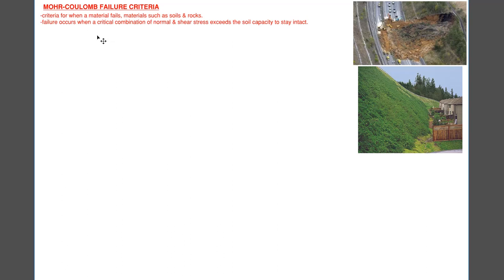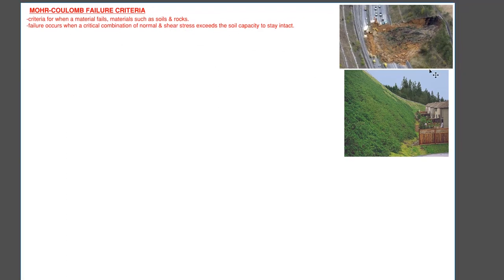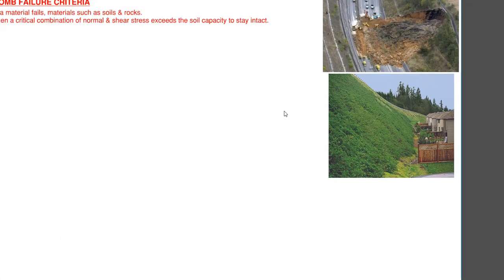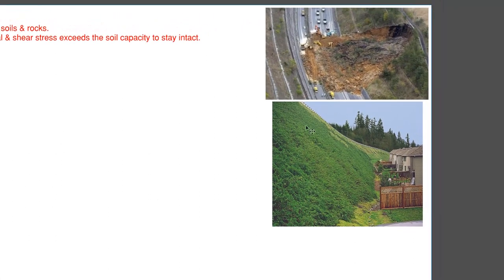Starting out with the criteria itself, what it tells us is when any material fails. And for the purposes of this course, let's talk about soils and rocks specifically. If you look at the pictures on the right, the picture down below shows a slope which is intact and hasn't failed, and the picture up above shows a failed slope.